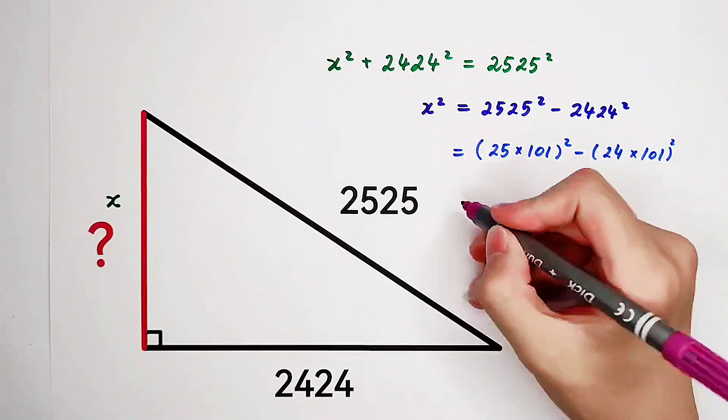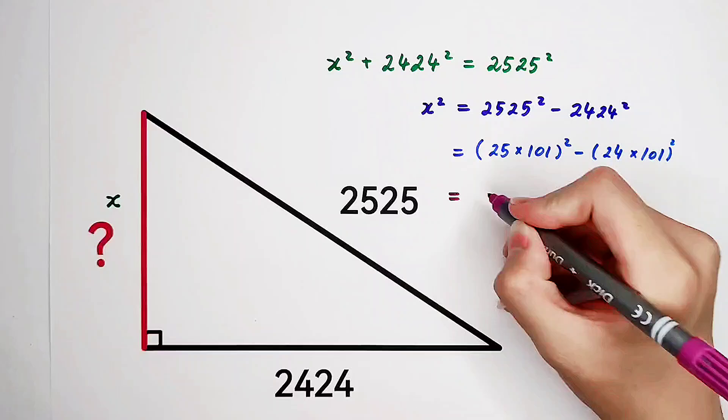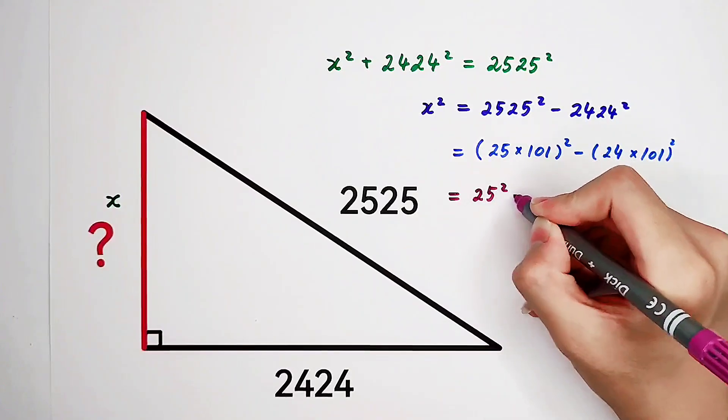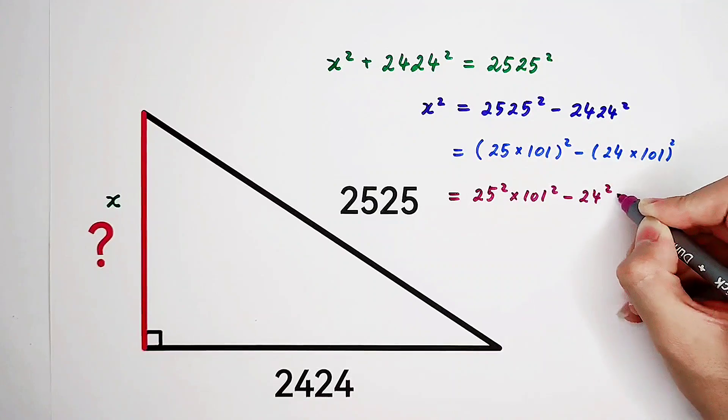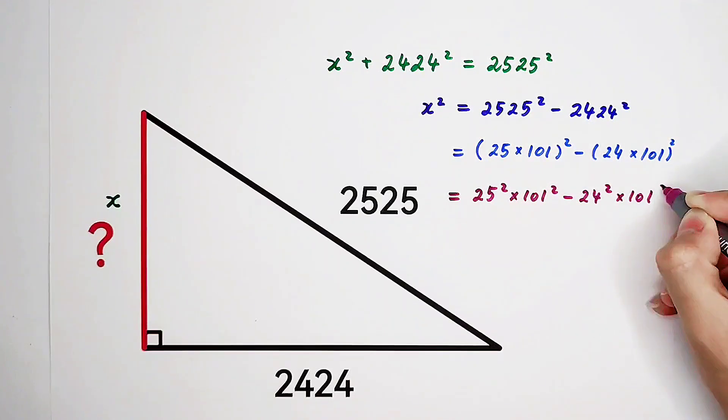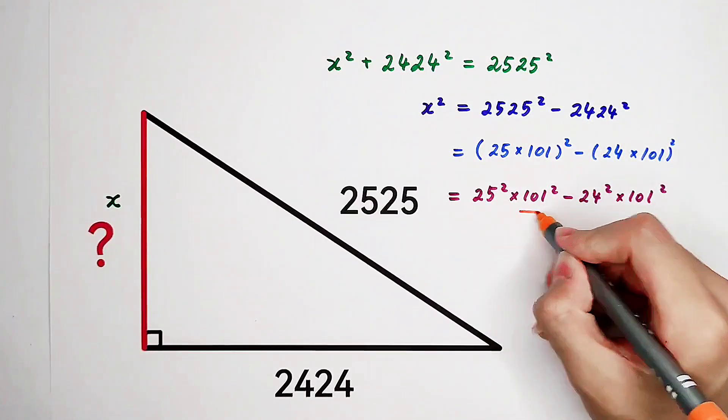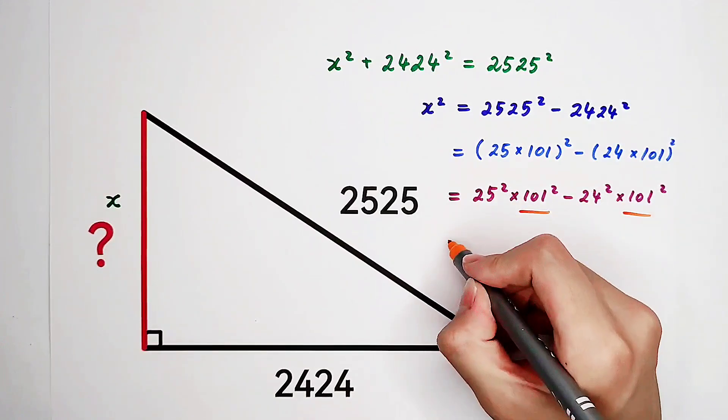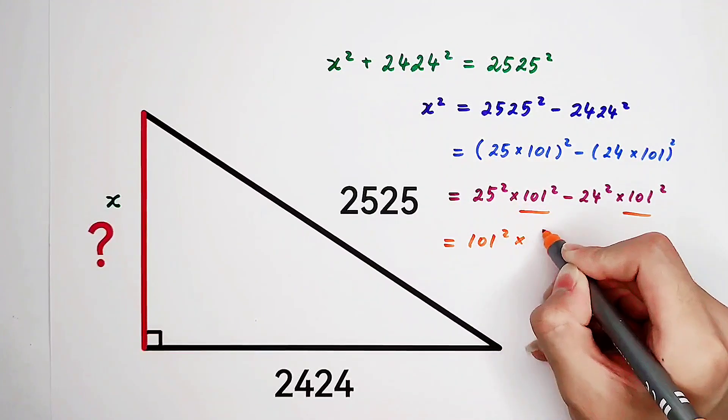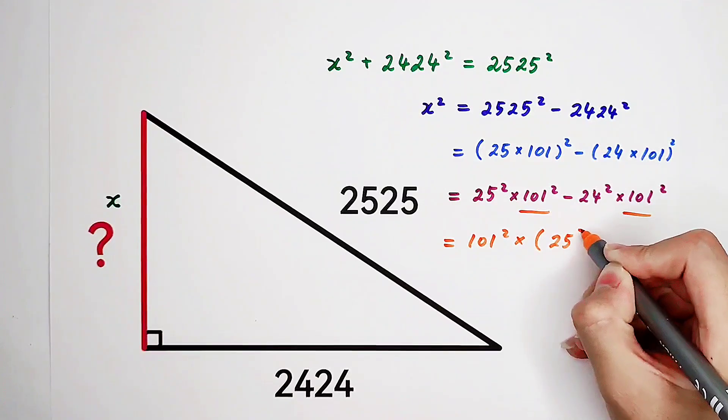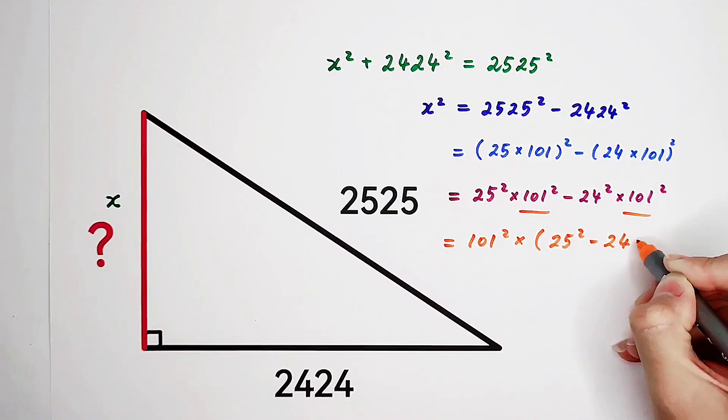So here we have 25 squared times 101 squared minus 24 squared times 101 squared. This can be taken out. So it is 101 squared times 25 squared minus 24 squared.